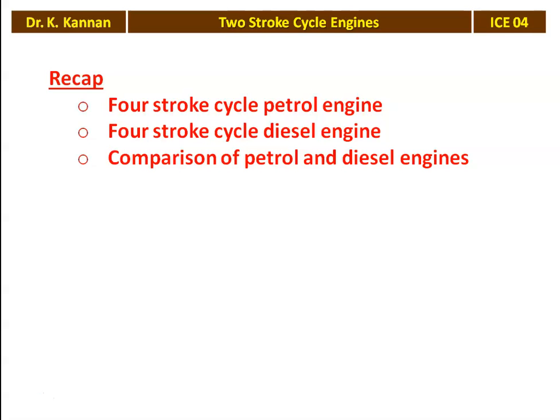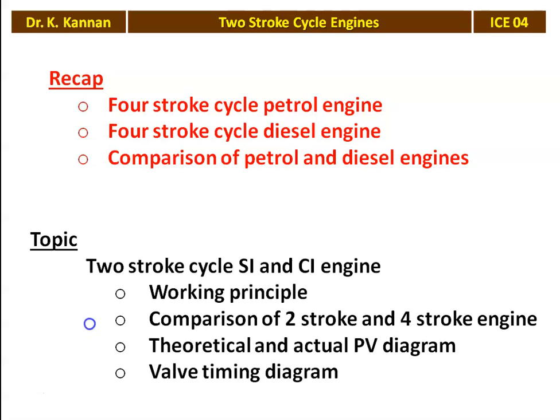Now we are going to study about the 2-stroke cycle SI and CI engine — that is, 2-stroke cycle petrol and diesel engine — the working principle of the 2-stroke cycle petrol and diesel engine, comparison between 2-stroke and 4-stroke cycle engine, theoretical and actual PV diagram, and the port timing diagram of the 2-stroke cycle engine.